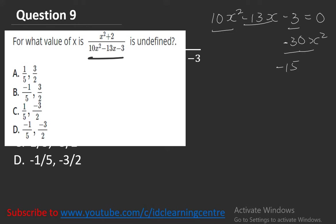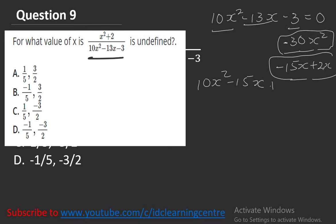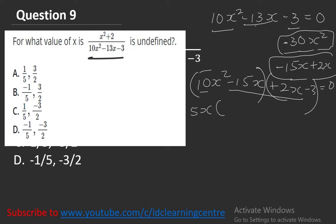We need factors of minus 30 that add to minus 13. Try minus 15x plus 2x: minus 15 times 2 gives minus 30 (x squared term), and minus 15x plus 2x gives minus 13x. So we replace the middle term: 10x squared minus 15x plus 2x minus 3 equals 0. Grouping: 5x(2x minus 3) plus 1(2x minus 3) equals 0, giving (2x minus 3)(5x plus 1) equals 0.